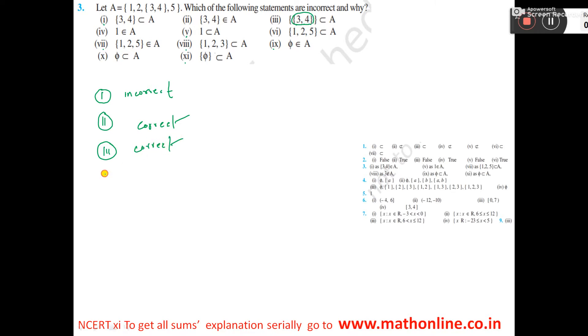This is a set formed by taking one element from here. So, this is a subset of A — also correct. Number 4: 1 is element of A. 1 is element of A. It is correct.